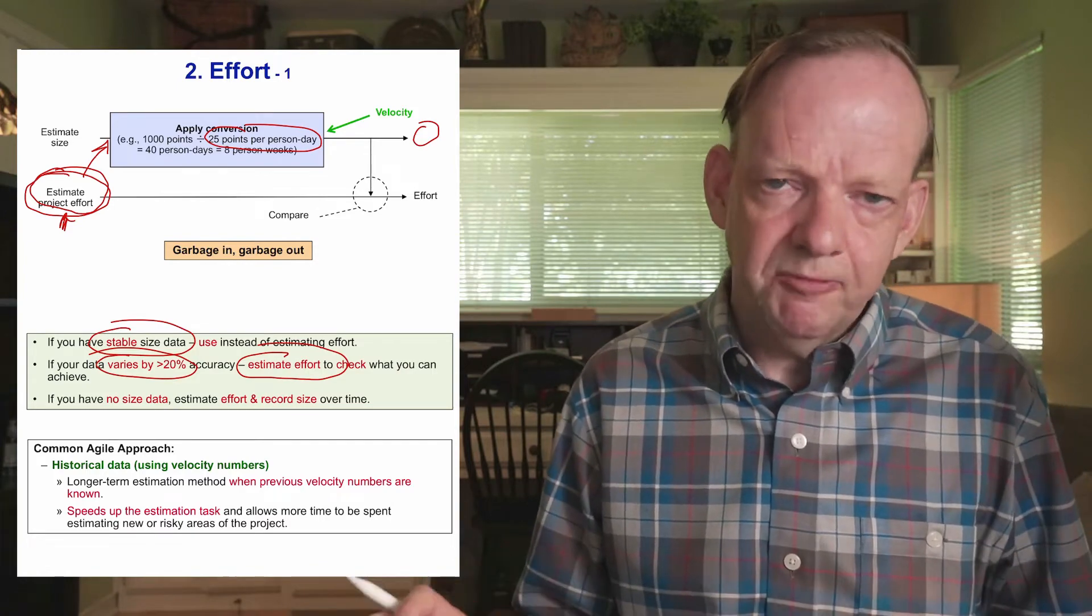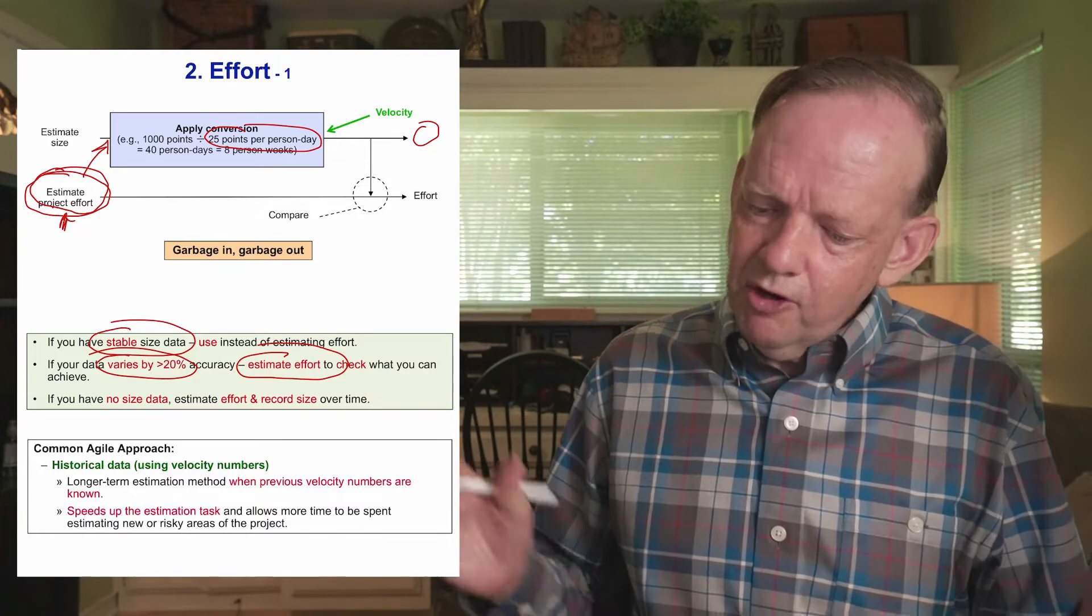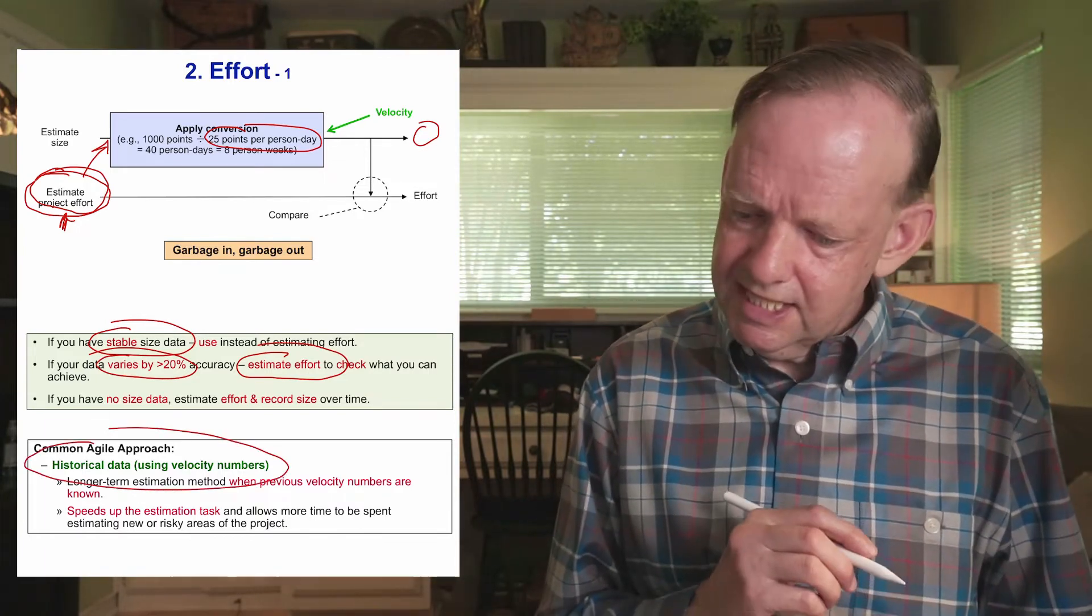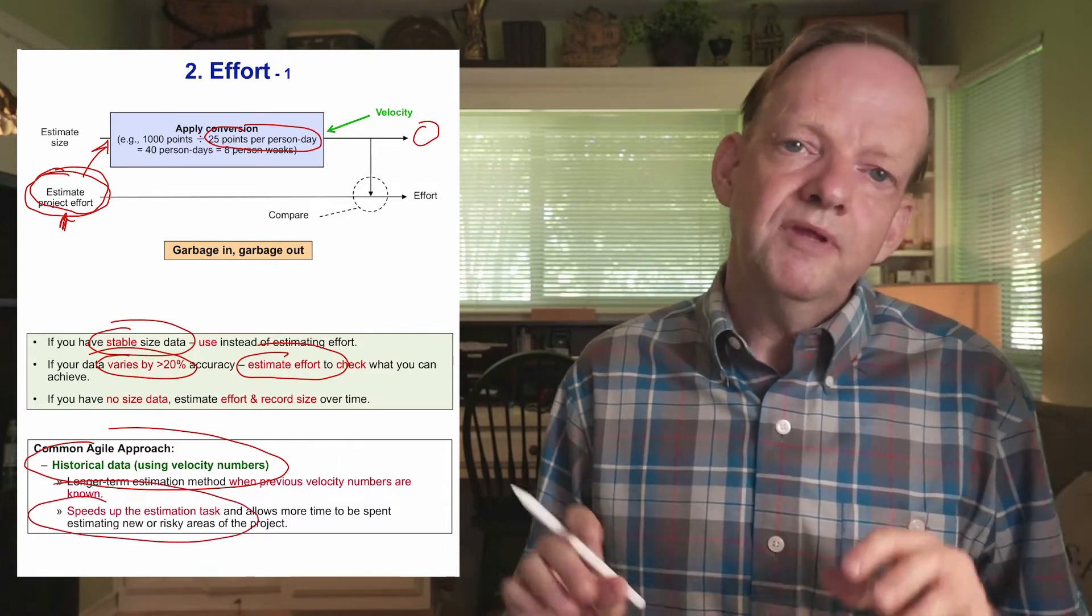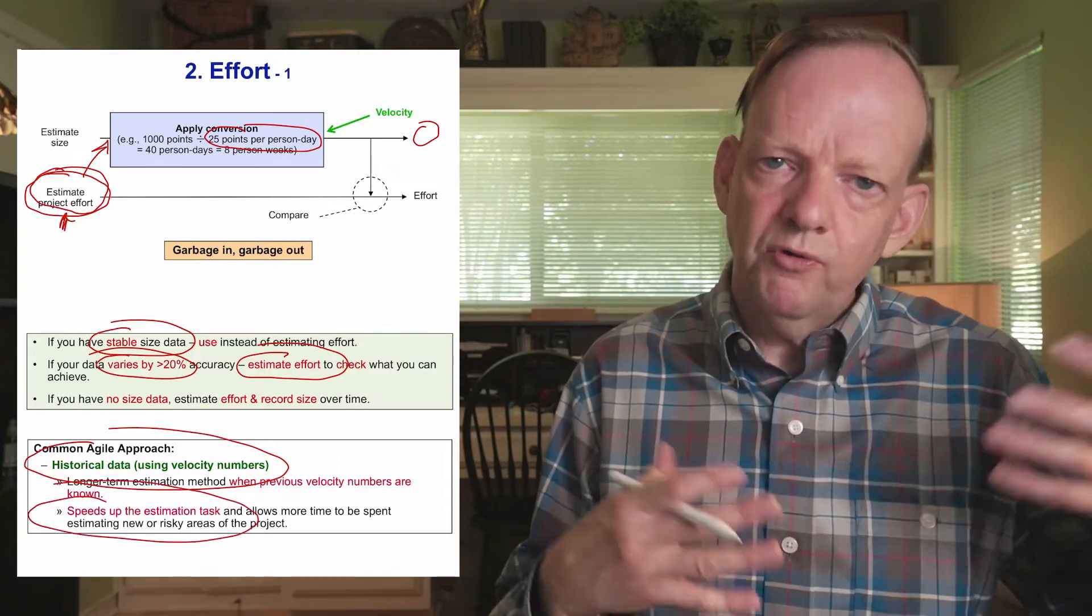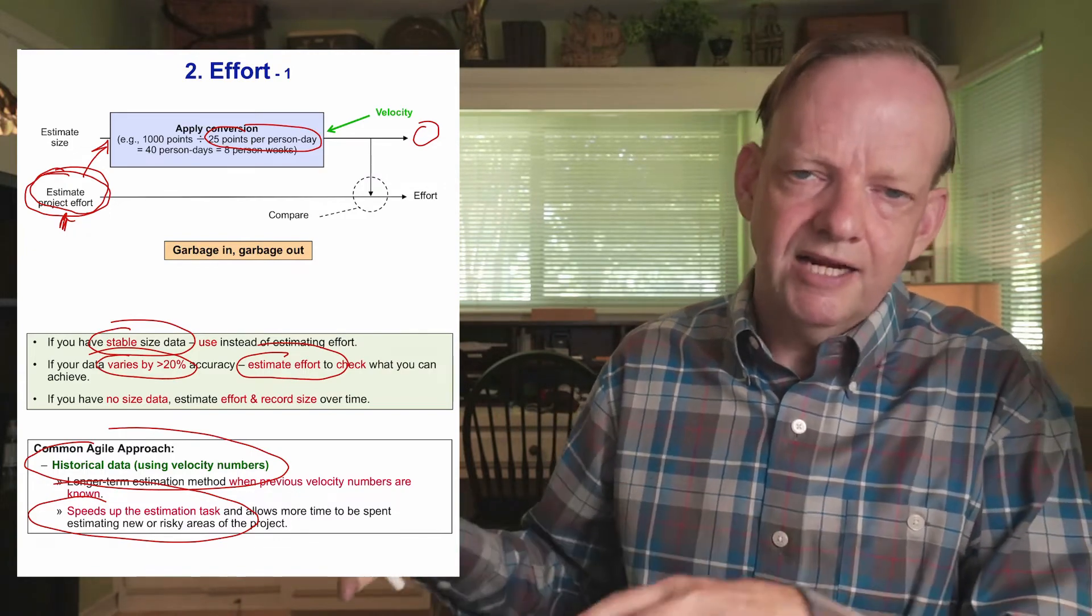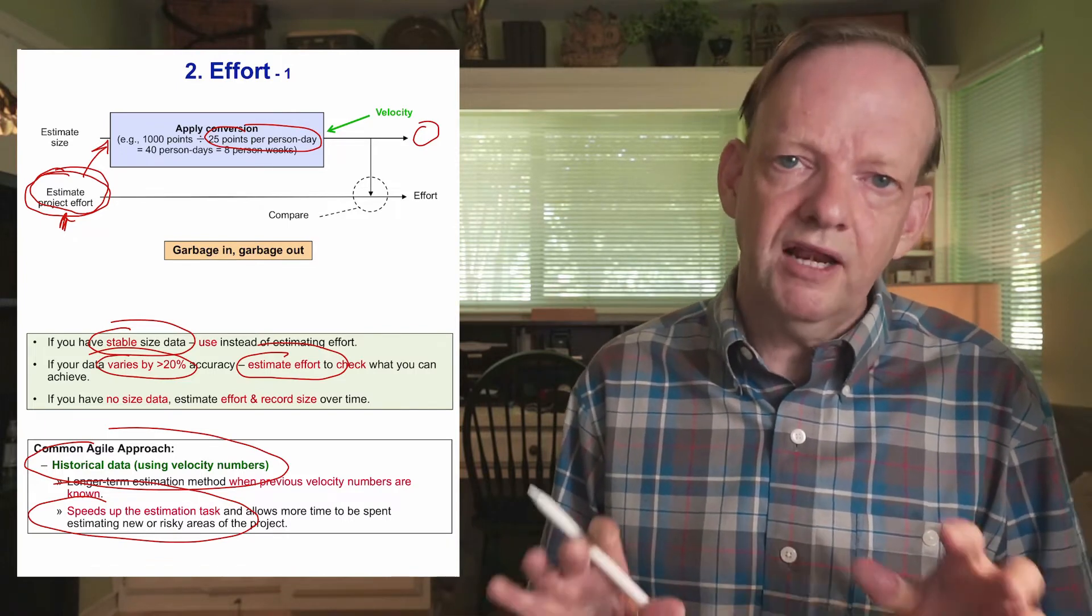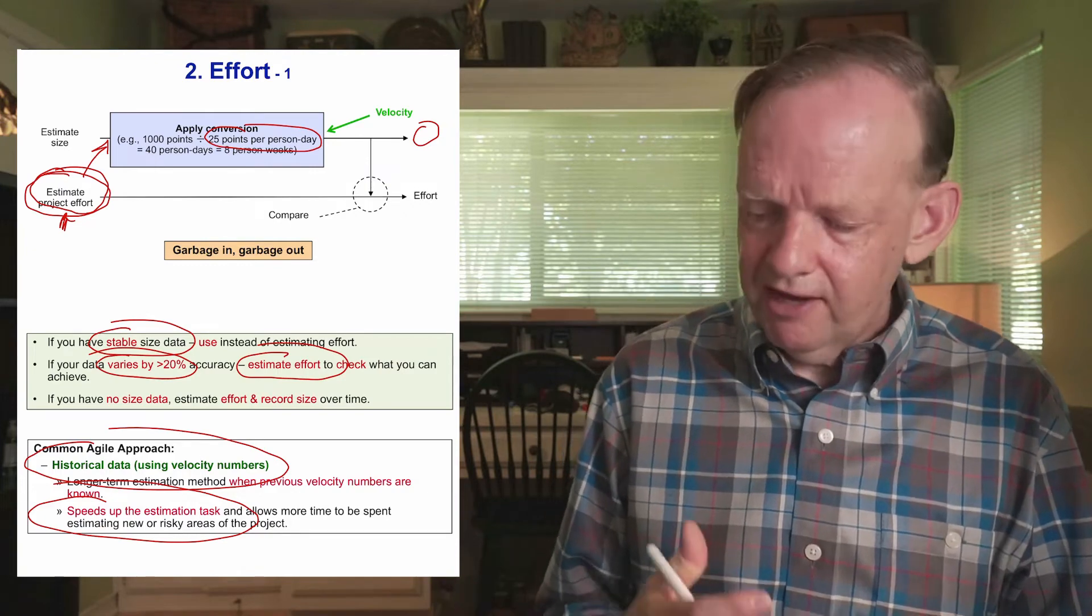Most teams use historical data eventually when they have velocity data. When they do that, they can really get a better, quicker estimate because they have more wisdom built into the velocity number. They can quickly head off major disasters or overcommitment by knowing roughly the likely duration it's going to take based upon their point count and their velocity.